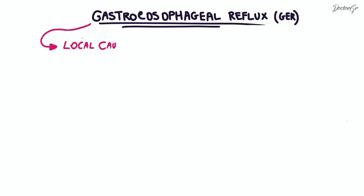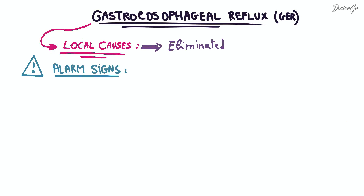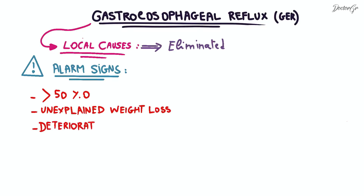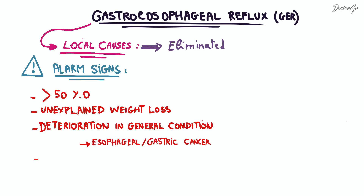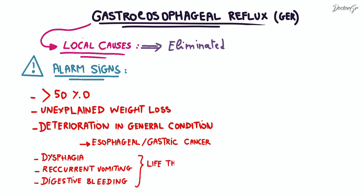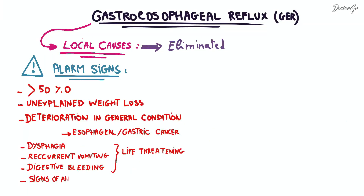It is important to note that local causes should always be eliminated before incriminating the diagnosis of GER. Before starting anti-reflux treatment, it is crucial to first look for alarm signs such as age over 50, unexplained weight loss or deterioration in general condition that could signal a serious condition like esophageal or gastric cancer, dysphagia, recurrent vomiting, and digestive bleeding that could hide a serious underlying cause, signs of anemia like pale skin and fatigue, or if the patient does not respond to any treatment.